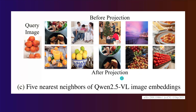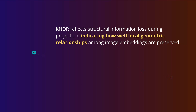With Qwen 2.5 vision language it gets interesting: at the original embedding, the closest images include a Christmas tree, a family, and a ship on the ocean — a bit strange. But after the projection, you are much closer to the semantic term of fruits — oranges, for example. So the projection of the visual data into the linguistic data space brings it closer to the generic semantic term. Knorr reflects the structural information loss during this connector projection, indicating how well local geometry relationships among image embeddings are preserved — or distorted.